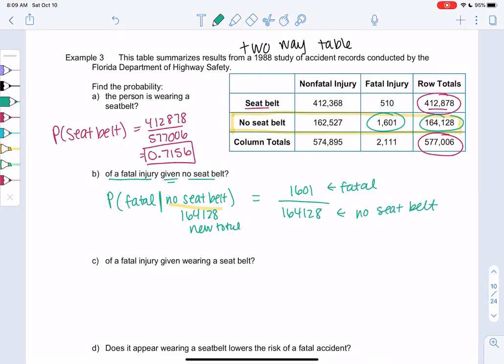So fatal out of no seatbelt, we're ignoring the rest of the table. Givens are basically, we're only looking at this condition. Let's go ahead and divide again.